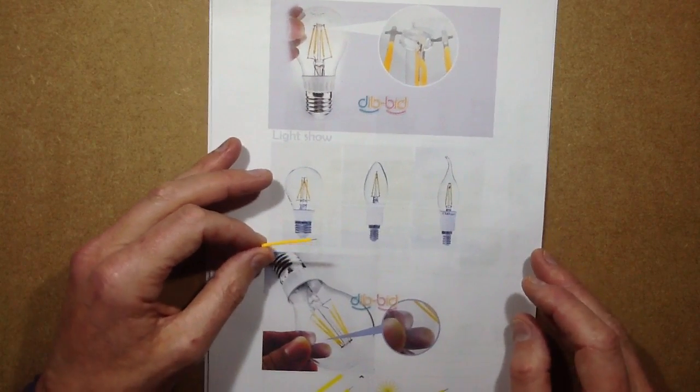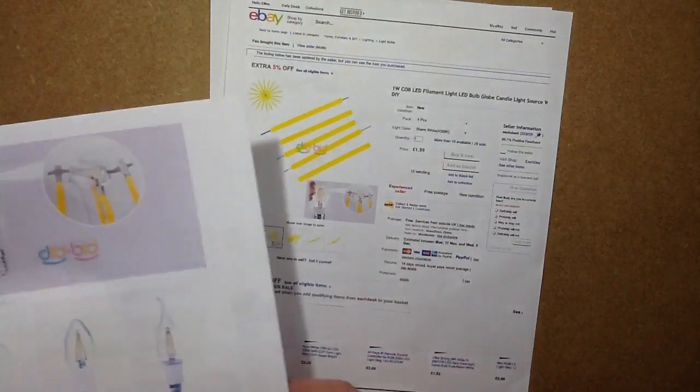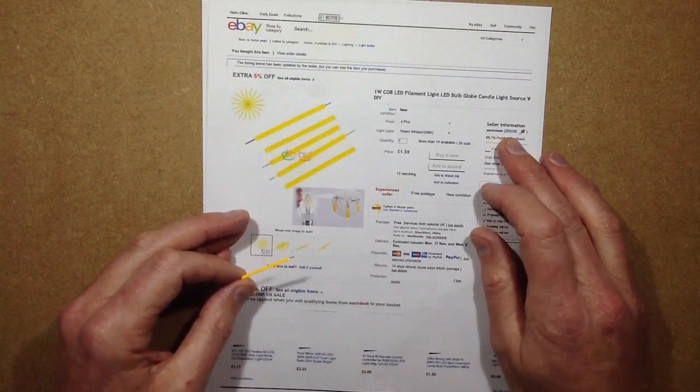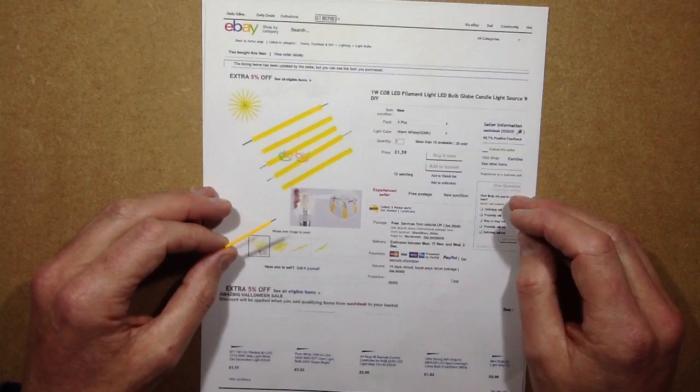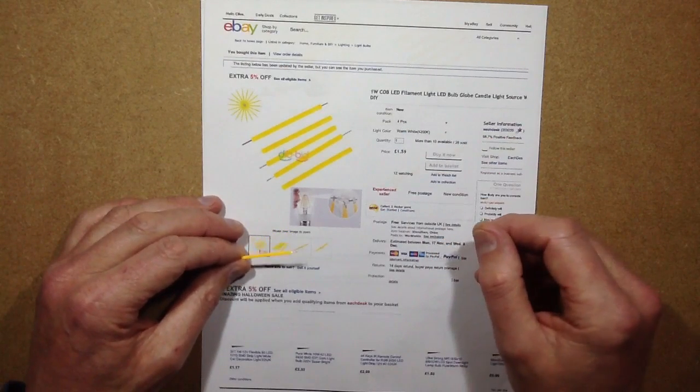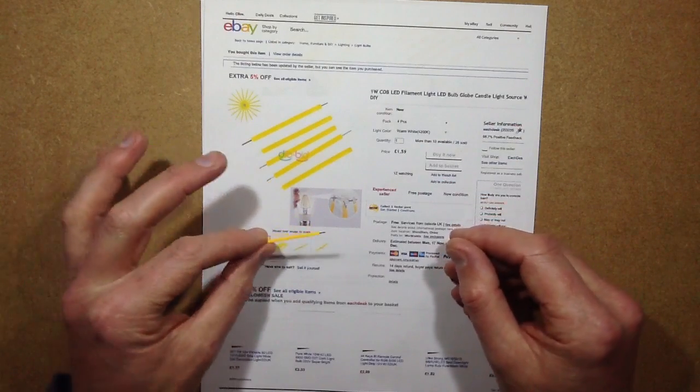Latterly, Julian Illett found a source online of the loose filaments that you can just buy on eBay. These are from a supplier called EachDesk and they're not that expensive. Four of them cost £1.59 including shipping, so that's about two dollars for these including shipping.